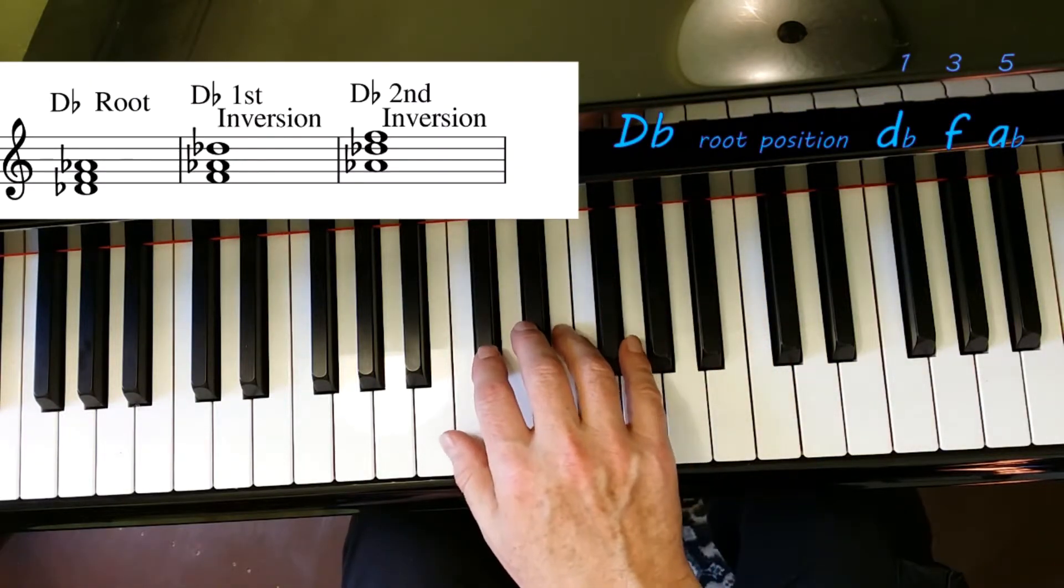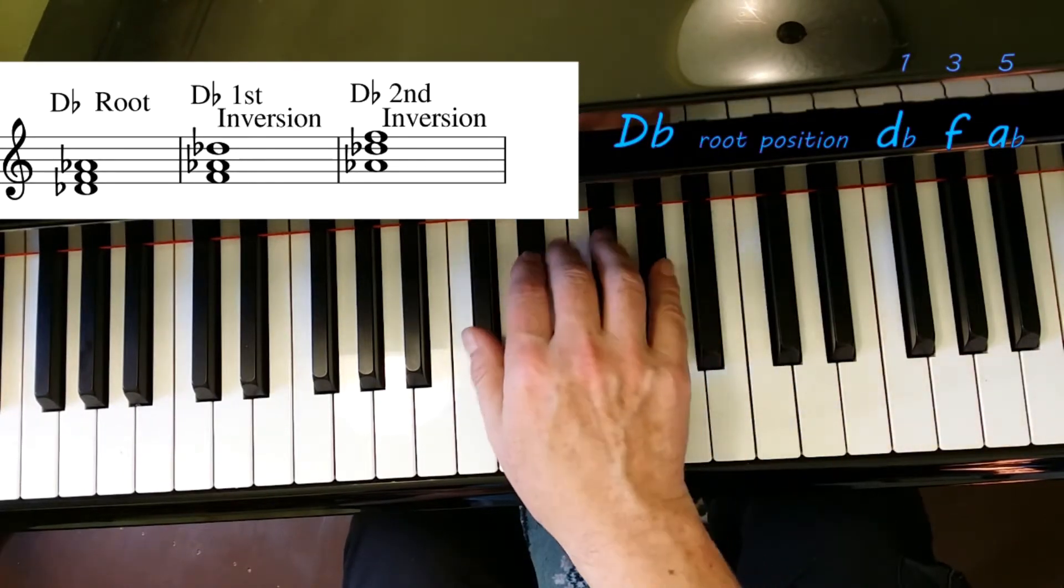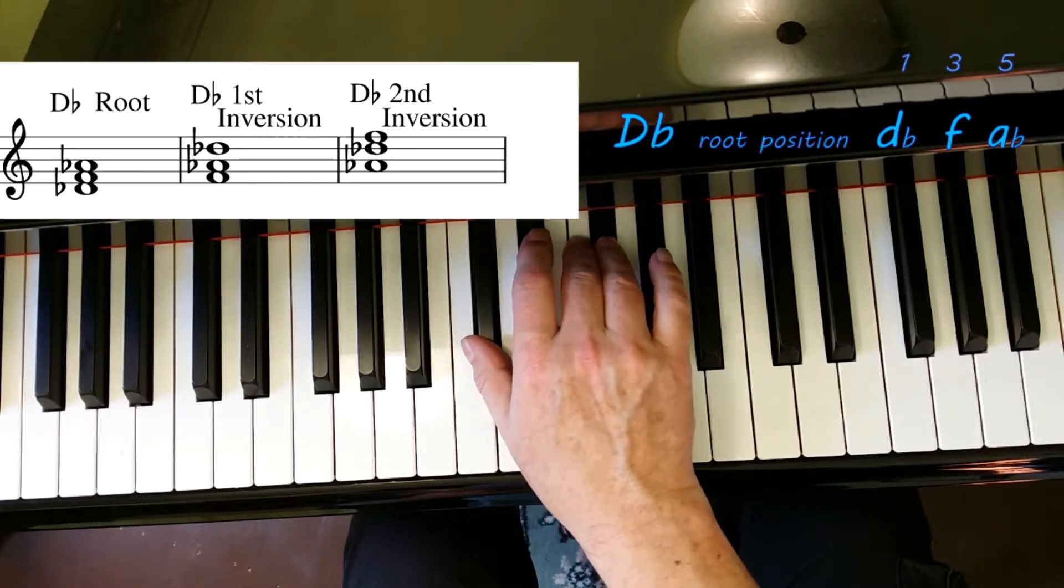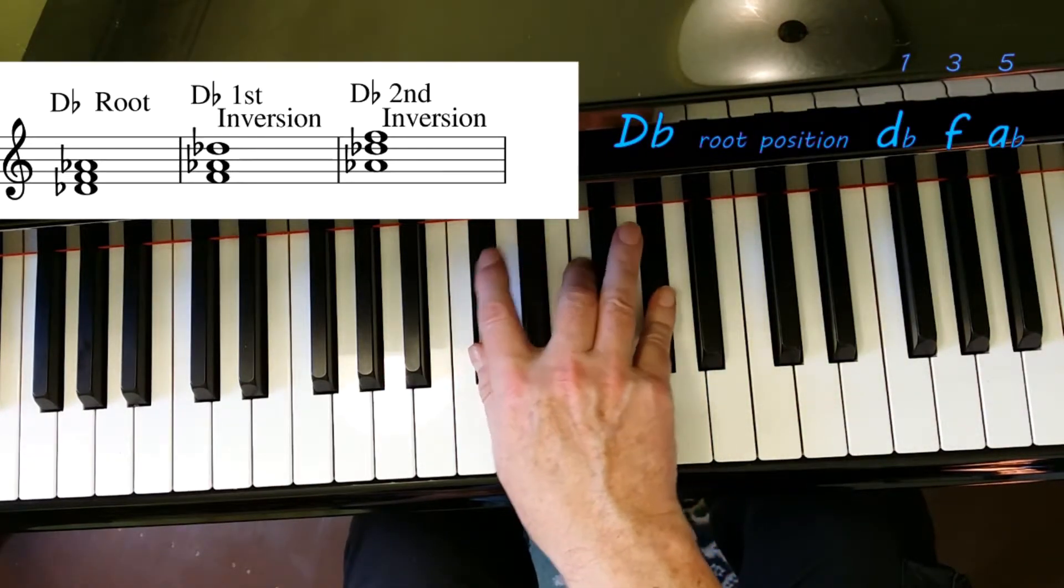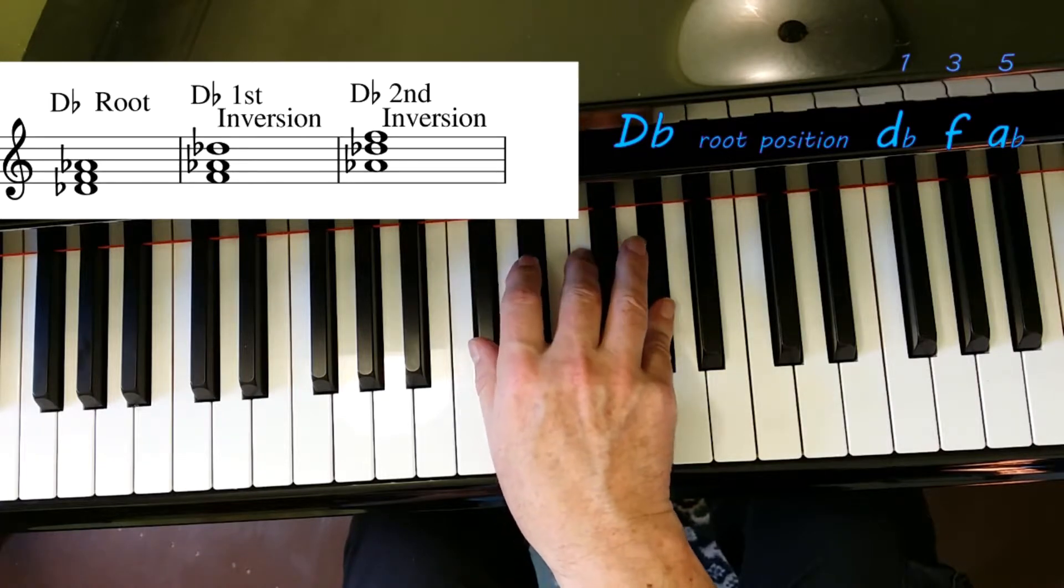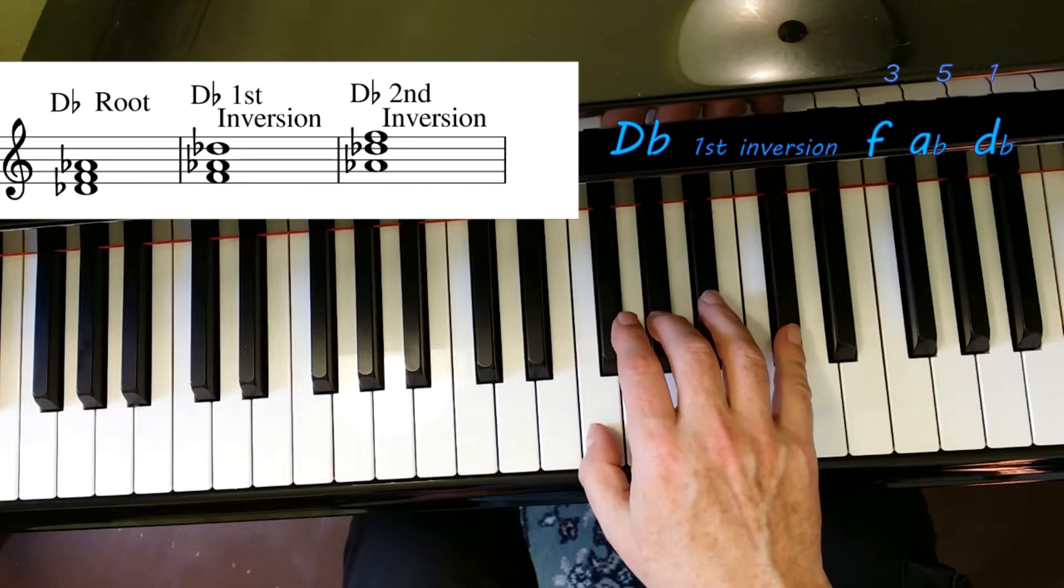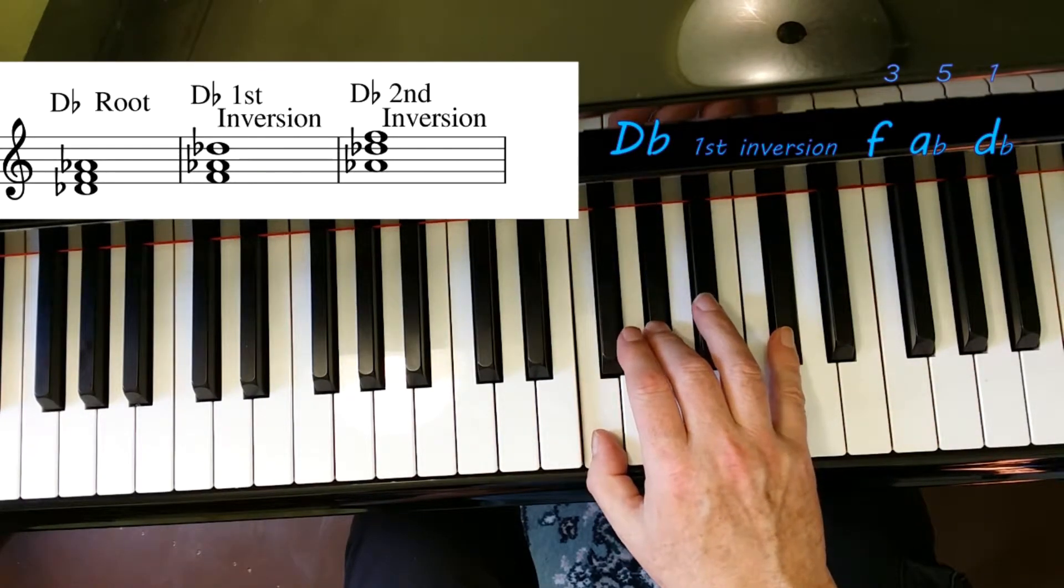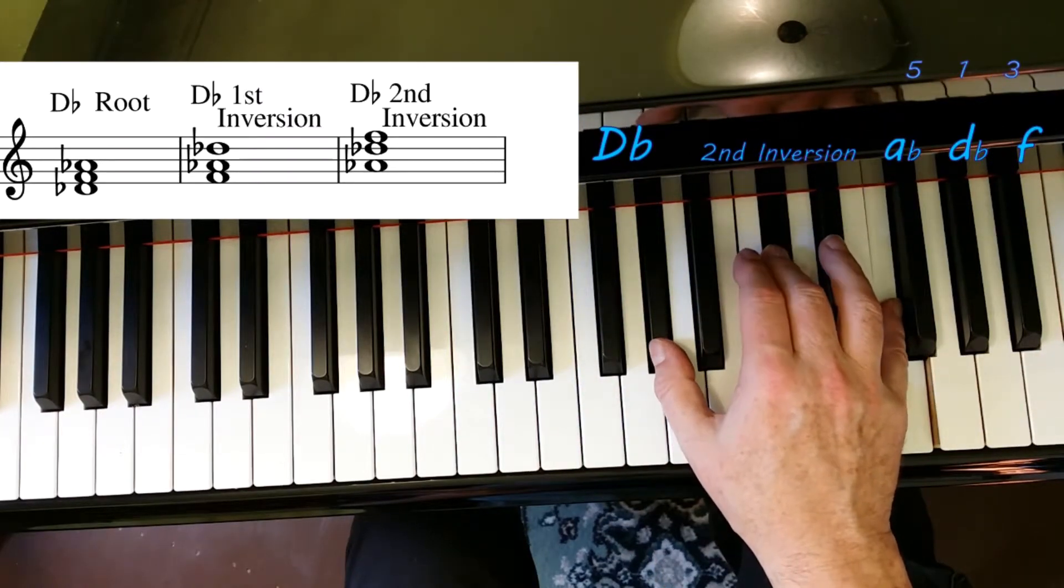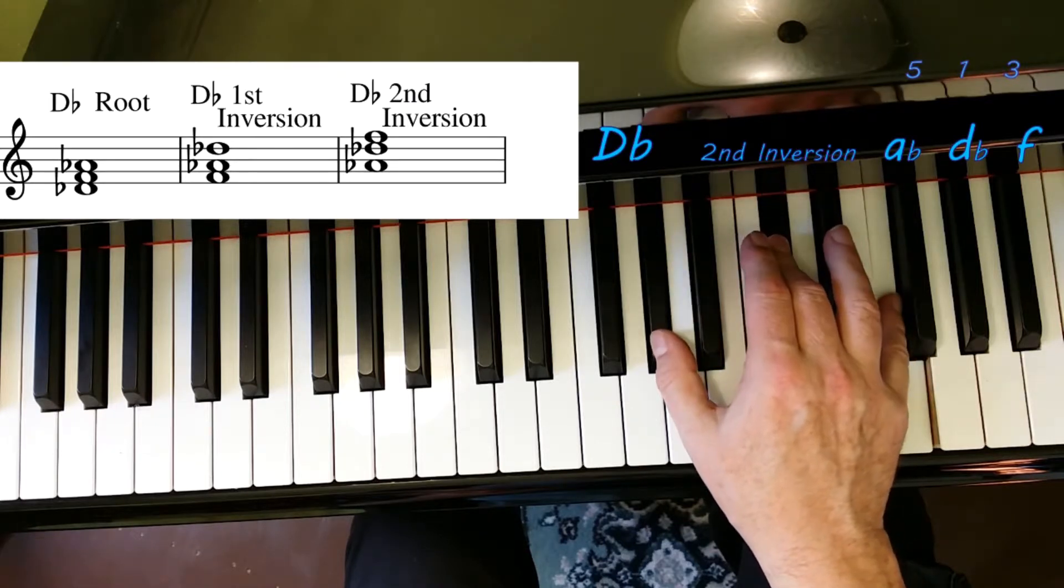Five flats: D flat major. Five, six, seven, eight. One, two, three, four, five. Here's your D flat root position triad: D flat, F, A flat. If you put the D flat on the top, it's first inversion: D flat, F, A flat. If we put the D flat in the middle, it's second inversion: one, three, five. D flat, F, A flat.